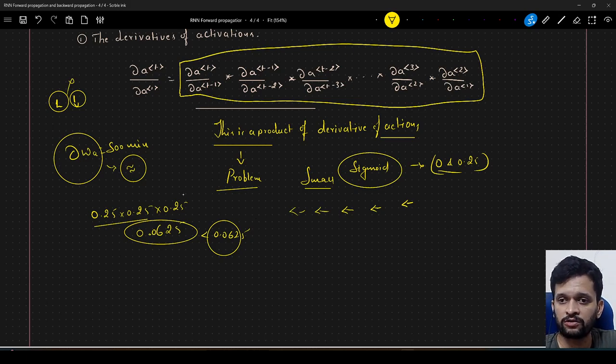Why? Because of this particular product here. What is this product? This is the product of, this is the product of derivative of activations multiple times, right. So this is one of the problem. The same thing can also, so this is called as vanishing gradient problem. Vanishing gradient.